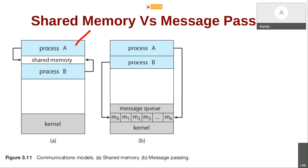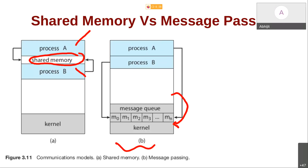In shared memory, you have two processes — process A and B — and they will have a region of memory in common. Both of them will be able to access this region. They need code to access shared memory intelligently, in a proper way. Just having shared memory is not enough; they also need code to use it effectively. In message passing, process A and B do not have anything in common — they request the kernel to send or receive a message. The difference is that in message passing, the kernel does more work, while in shared memory, the kernel simply makes shared memory available.